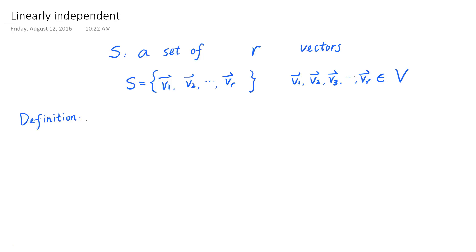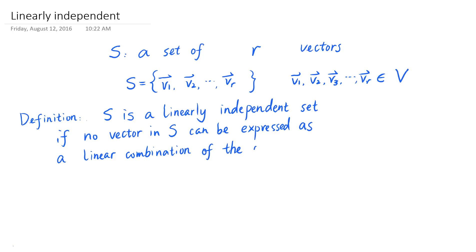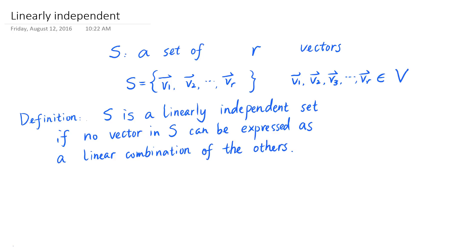So here's the definition. The set S is said to be a linearly independent set if none of the vectors in S can be expressed as a linear combination of the rest of the vectors. So that's the definition. And now let me give you an example of what this definition is talking about.